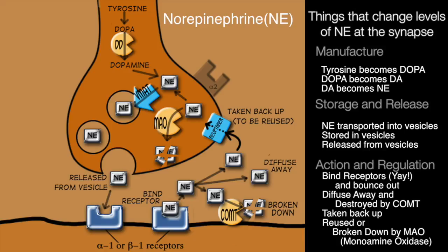Every time the norepinephrine binds, you get a response. At some point the norepinephrine either diffuses away, or it gets broken down by enzymes sitting on the target cell, like COMT. Sometimes the norepinephrine gets re-uptaked — it gets sucked back up and reused. And back inside the cell, it also can be broken down by an enzyme called monoamine oxidase.